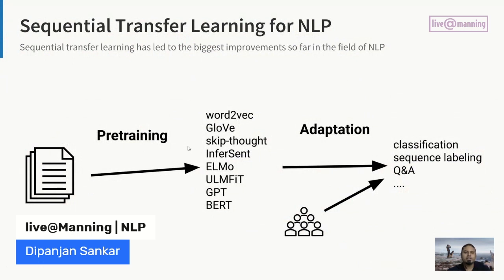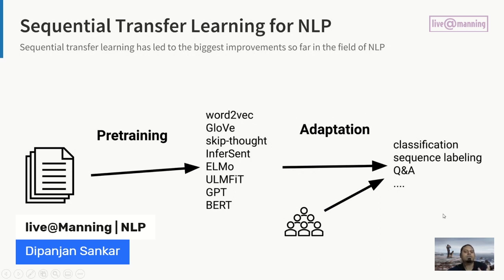The whole idea is to ingest this corpus, understand relationships between words, and build a generic representation-learning scenario. Once the model has learned these representations, you can take the pre-trained weights and layers and adapt this to your own task — the adaptation phase. In the industry, we take one of these pre-trained models and use or adapt it for our own task, which could be classification, sequence labeling, question answering, summarization, and so on.